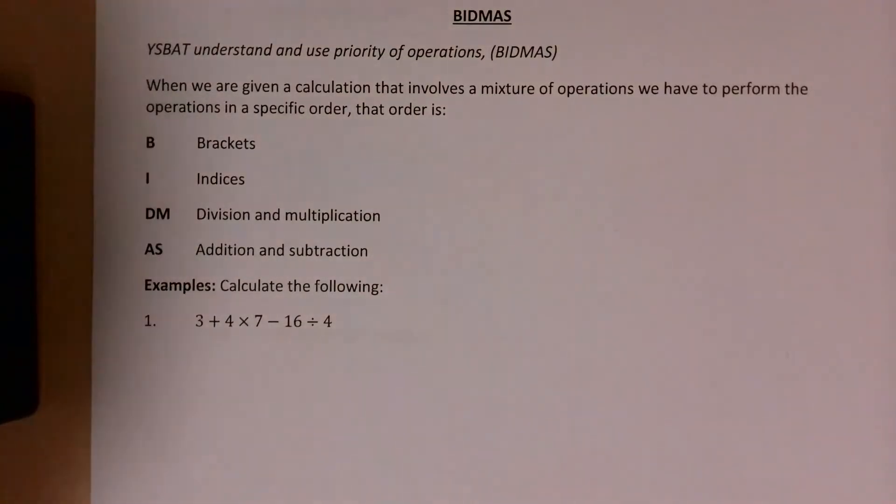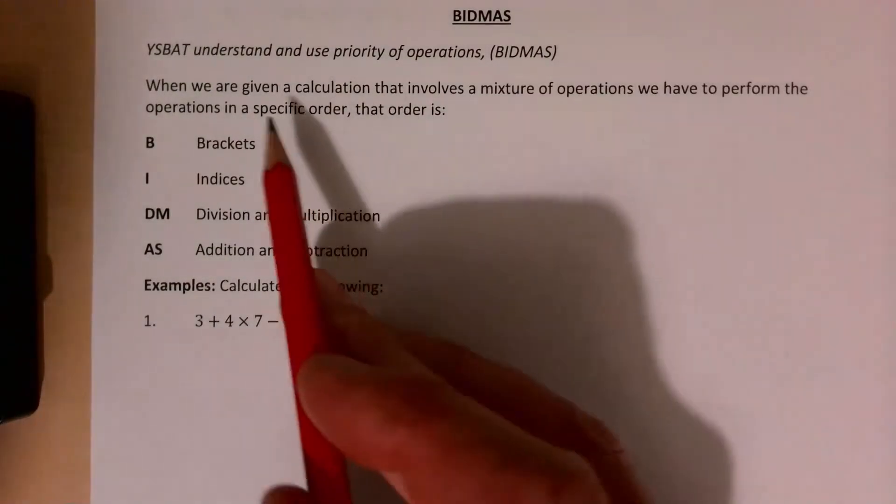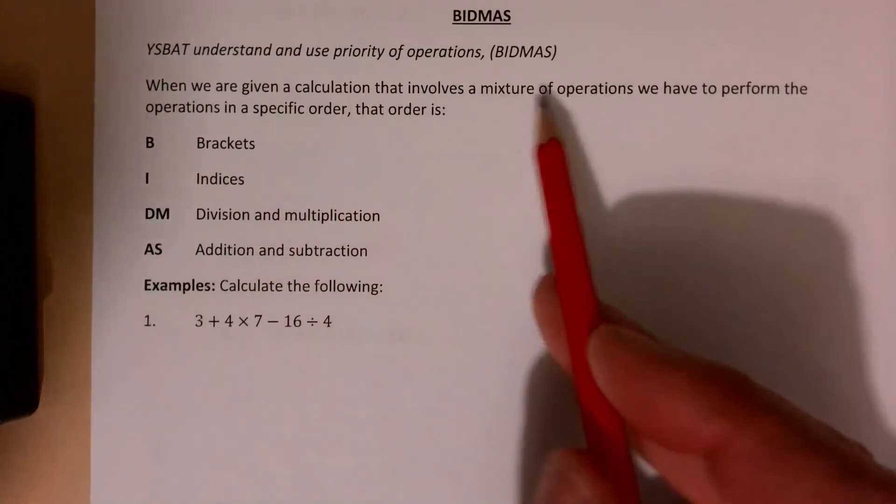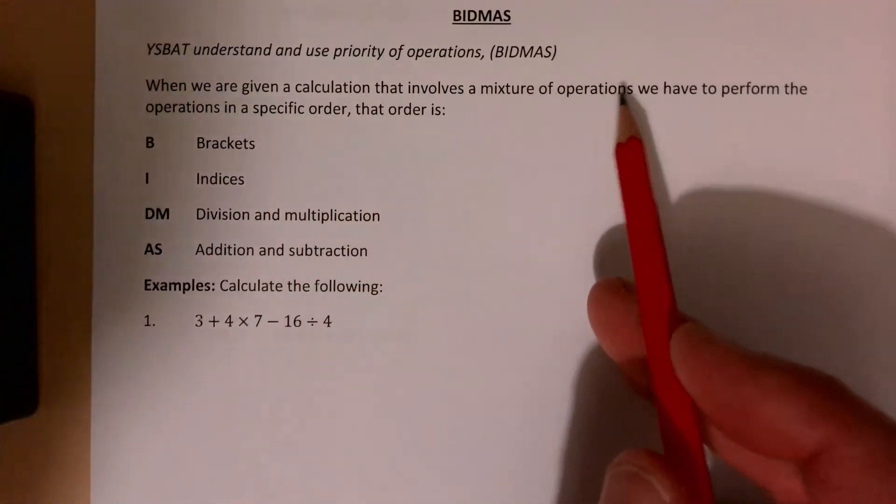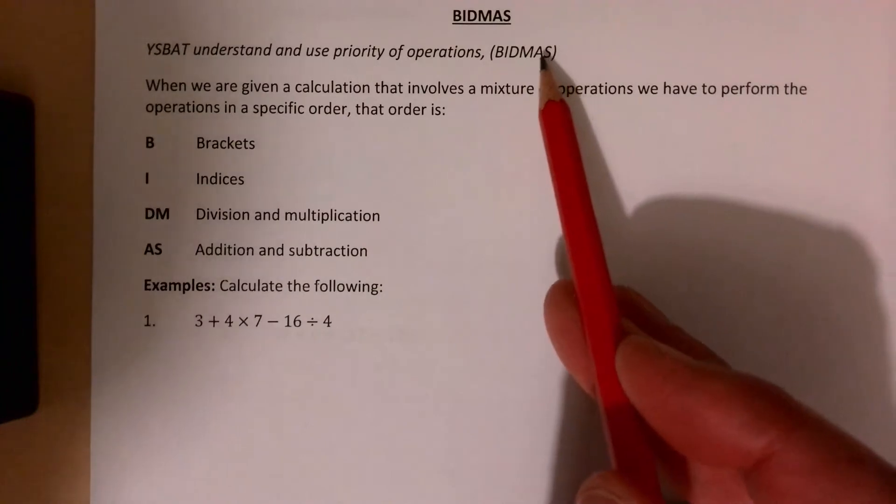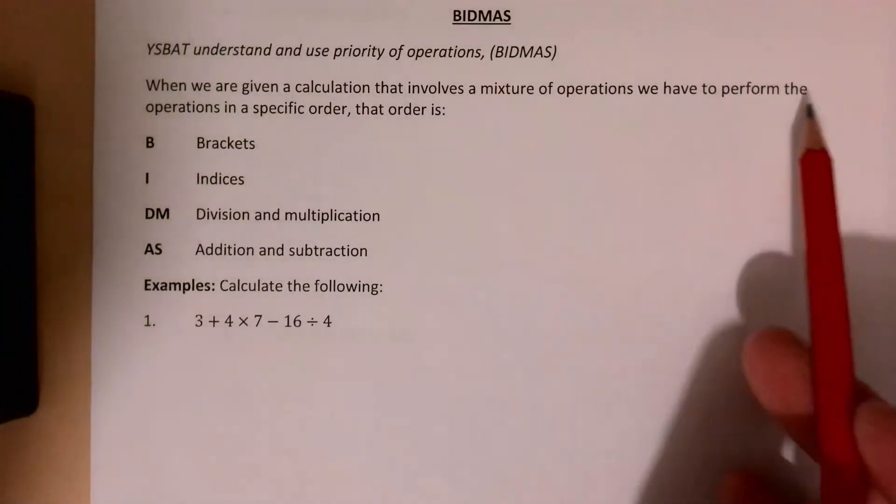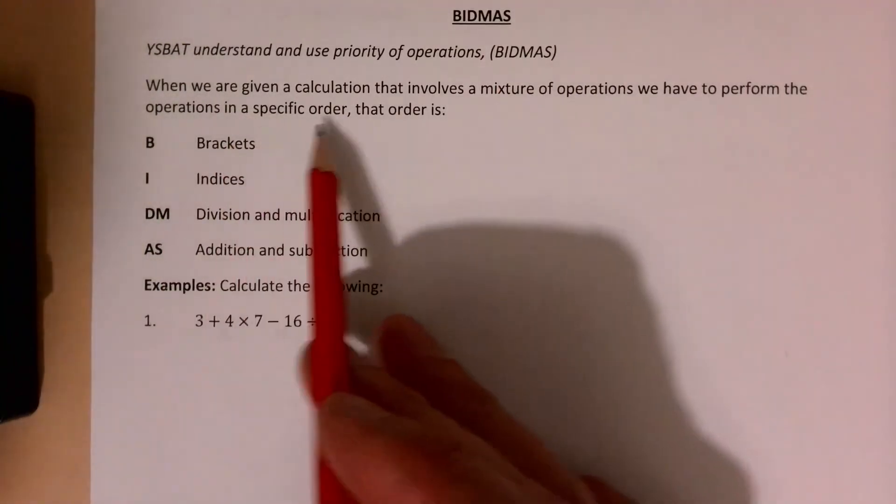This is a video on BIDMAS. When we're given a calculation that involves a mixture of operations - and by operations we mean things like divide, multiply, add, subtract, brackets, indices - we have to perform the operations in a specific order.